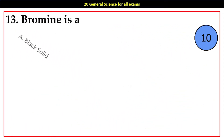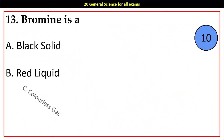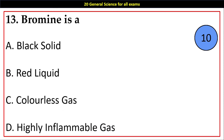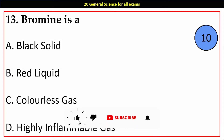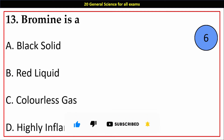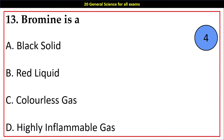Question number 13. Bromine at room temperature is: Options A. Black Solid, B. Red Liquid, C. Colorless Gas, D. Highly Inflammable Gas. Answer: B. Red Liquid.